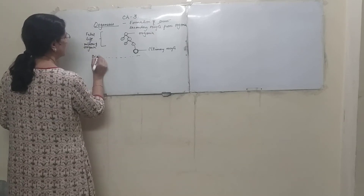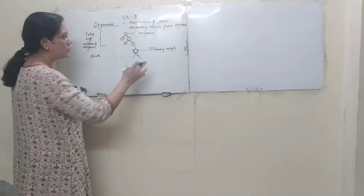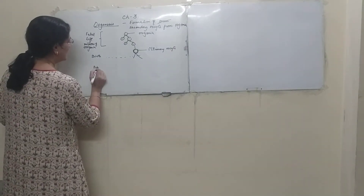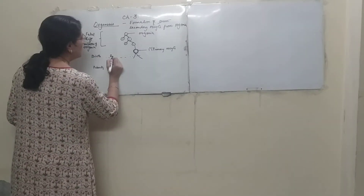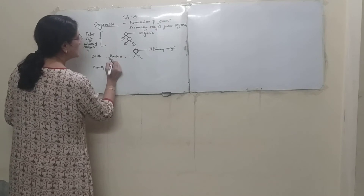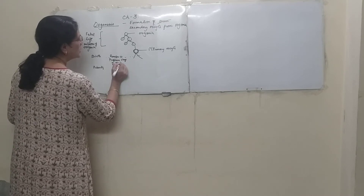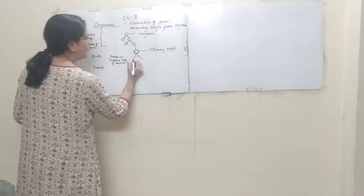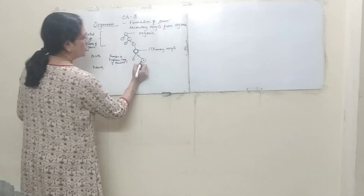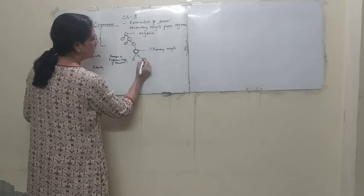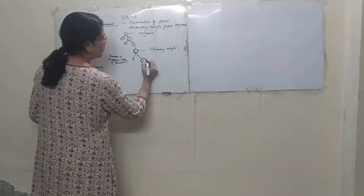This primary oocyte, formed at the time of birth, is going to remain in this form till puberty. It remains arrested in the prophase stage of meiosis 1. Then after puberty it gets unequally divided, producing what is called a polar body and a secondary oocyte.